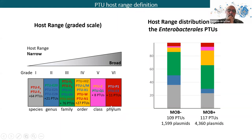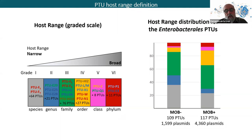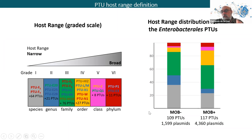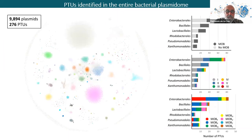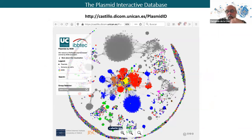Very few PTUs lie outside an order — at the class or phylum level — and these are new findings we are still analyzing. This means that the realm of a PTU is the family if it's a conjugative element, or maybe narrower if it's a non-transmissible, no-MOB element. The host range of MOB-minus or no-MOB PTUs is narrower than transmissible ones.